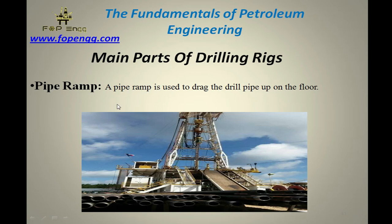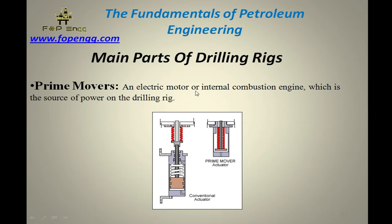Pipe ramp — used to drag the drill pipe from the pipe rack to the rig floor. From here we take the pipes and transfer them to the rig floor. Prime mover — an electrical motor or internal combustion engine which is the source of power for the rig.